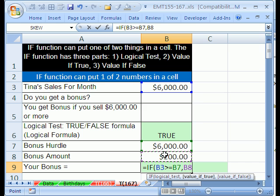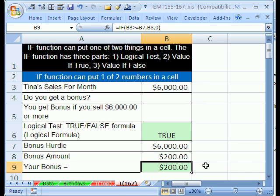So if it's true, we put 200. And then we put a comma, and it jumps, and the bold says value is false. We put a zero. Close parentheses, Control-Enter. Control-Enter just keeps the cell highlighted.